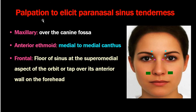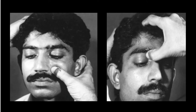For palpation of paranasal sinus tenderness: the maxillary sinus is palpated over the canine fossa; ethmoid sinuses medial to the medial canthus. For the frontal sinus, since the floor of the sinus is the superior medial aspect of the orbit, you tap at the superior medial aspect of the orbit — that is the floor and inferior wall of the frontal sinus, made of the diploe bone.